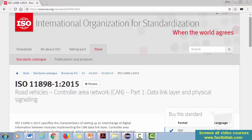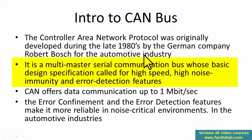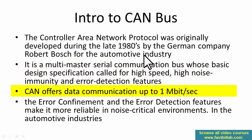The Controller Area Network protocol is governed by ISO specification. CAN is a multi-master serial communication bus whose basic design specification stresses high speed, high noise immunity, and error detection features. It doesn't focus much on saving power or low power communication. All these features are included in order to improve the quality of service of the protocol.